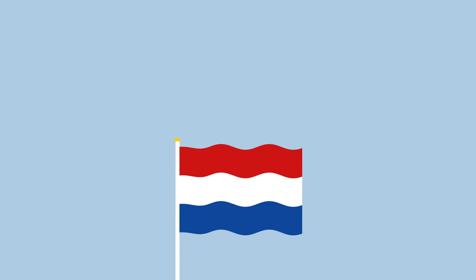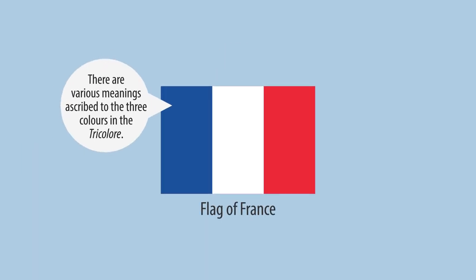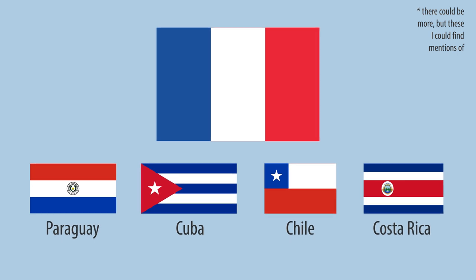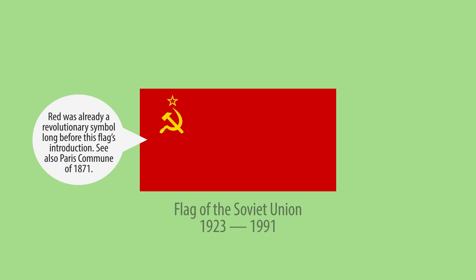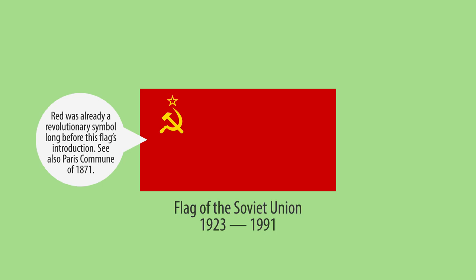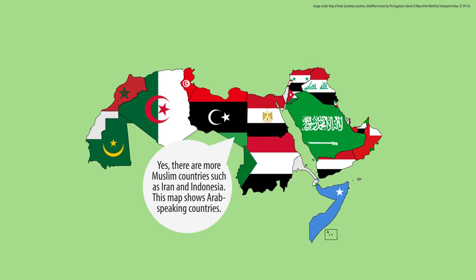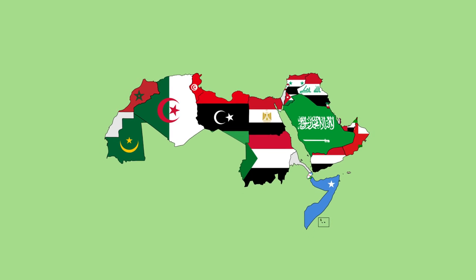The red, white, and blue Dutch flag became synonymous with liberty and republican government due to its long war for independence from Spain. France adopted the same colors following the French Revolution, and other countries would also adopt the three colors to express equal principles. The Soviet Union flew a red flag with hammer and sickle, solidifying the color's association with communism. Then there are the flags of predominantly Muslim countries, using mostly traditional colors.